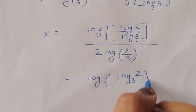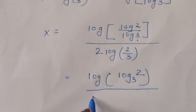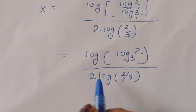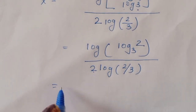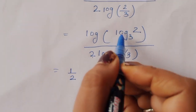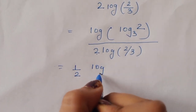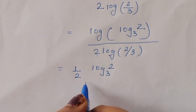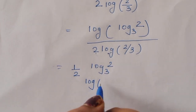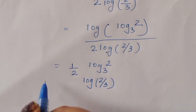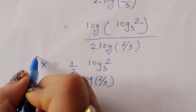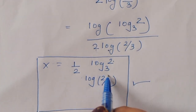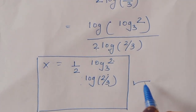So we can write x is equal to log of (log base 3 of 2) divided by 2 times log of (2/3). This can also be expressed as one half times log of (log base 3 of 2) to the base log(2/3). This is the final solution: x equals one half times log base log(2/3) of log base 3 of 2. Thank you so much.